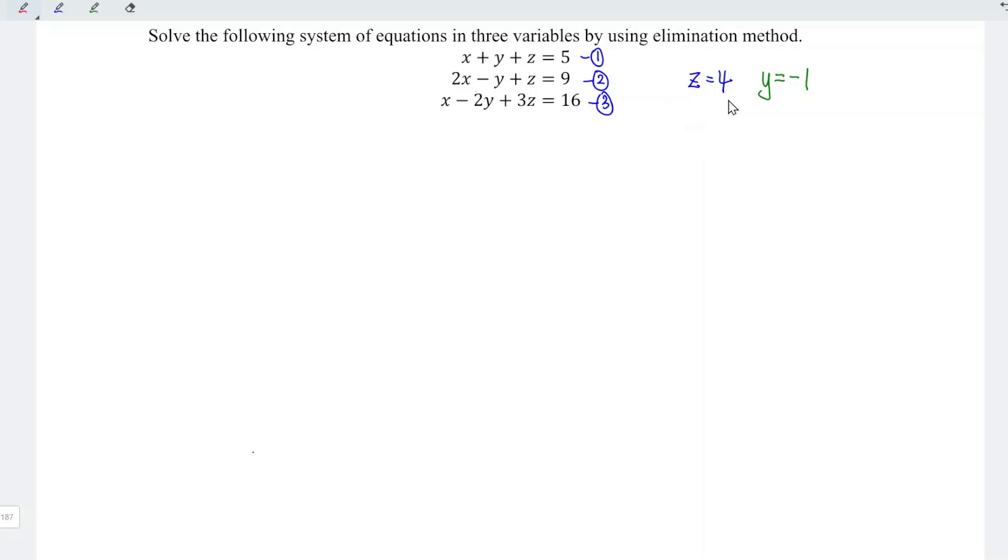With the values of z and y, we can now put it into the first equation. So we have x plus y, which is minus 1, and we have plus z, which is equal to 4, equals 5. Which means that x equals 5 plus 1 minus 4. And this is equal to 2.